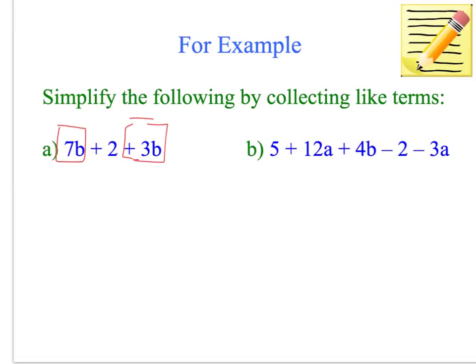Then we rewrite the expression, 7b plus 3b plus 2. Then we can combine them together. 7 and 3, so it's 10b plus 2, and that is our final answer. That was quite a simple one.